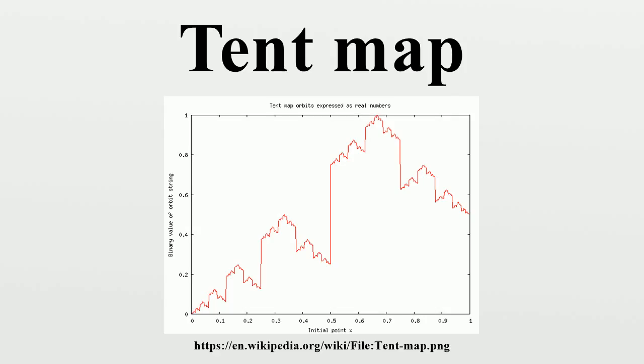Asymmetric tent map: The asymmetric tent map is essentially a distorted, but still piecewise linear, version of the case of the tent map. It is defined by for parameter.